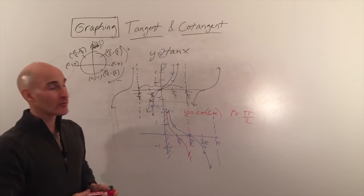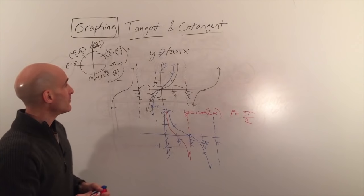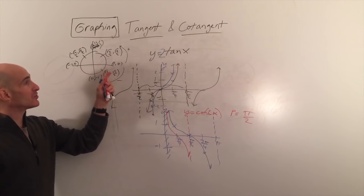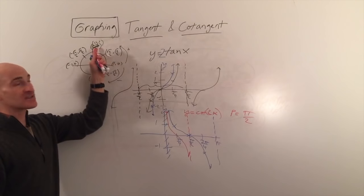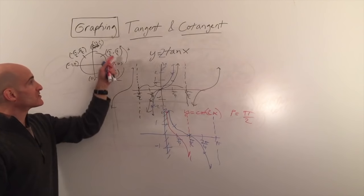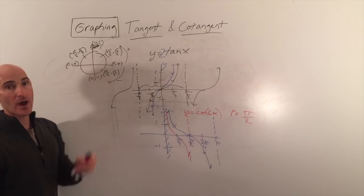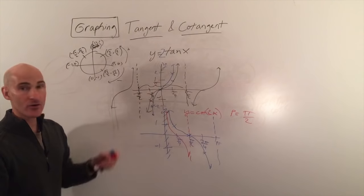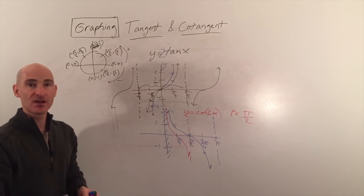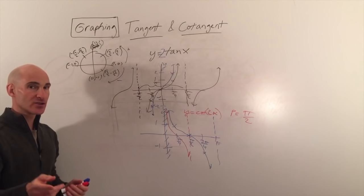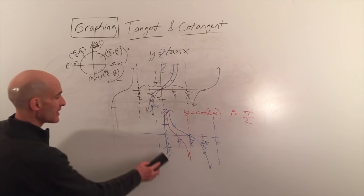If you forget, go back to the unit circle: tangent is y over x from negative 90 to positive 90 degrees, and cotangent is x over y from 0 to 180 degrees. From those parent graphs you can stretch, compress, and shift. Let's look at some more difficult problems.